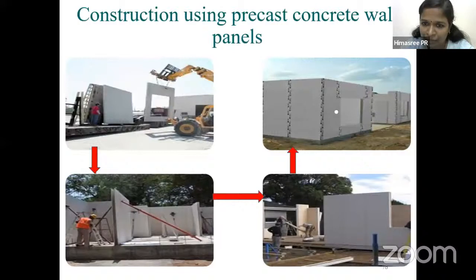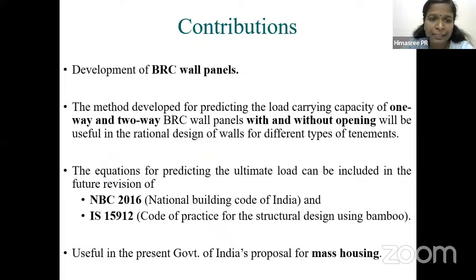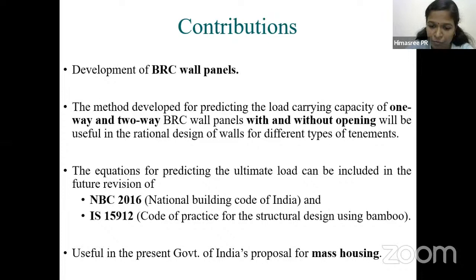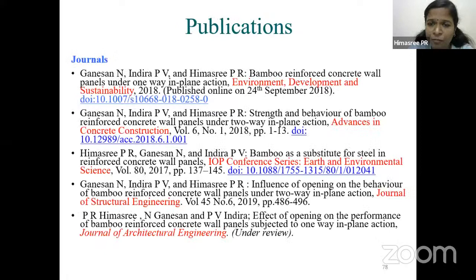One-way and two-way bamboo reinforced concrete wall panels, with and without openings, can be manufactured in factories, transported to site, and installed using a crane within a very short duration. The contributions include development of a sustainable bamboo reinforced concrete wall panel, and methods for predicting the load carrying capacity of one-way and two-way wall panels with and without openings. These can be incorporated in revisions of NBC and IS codes, and proposed for mass housing by the Government of India.